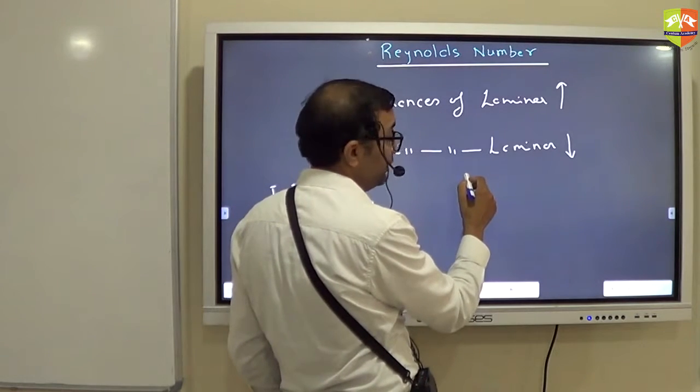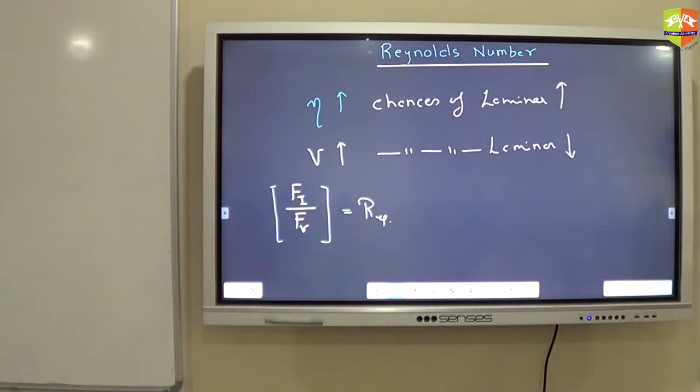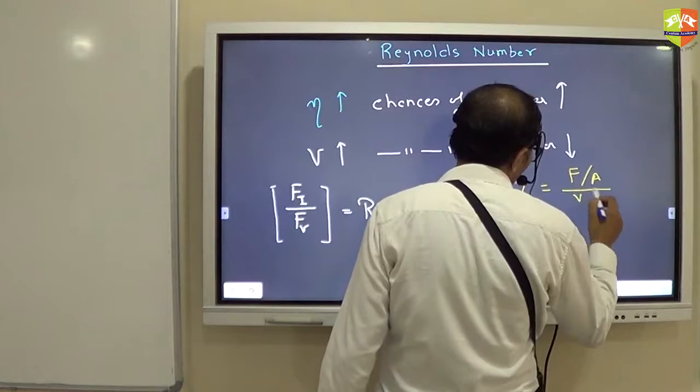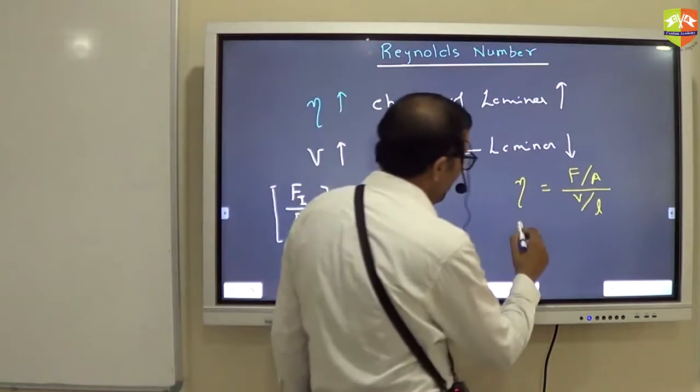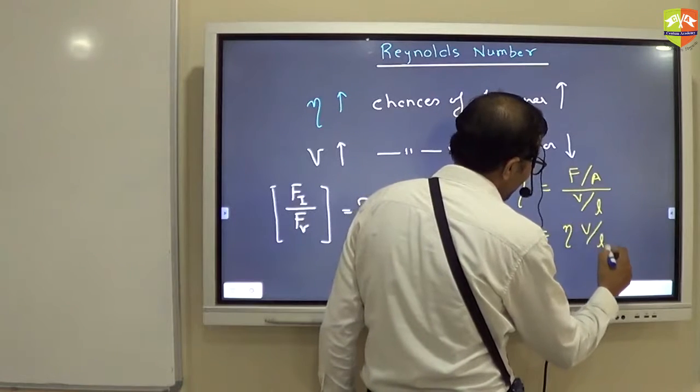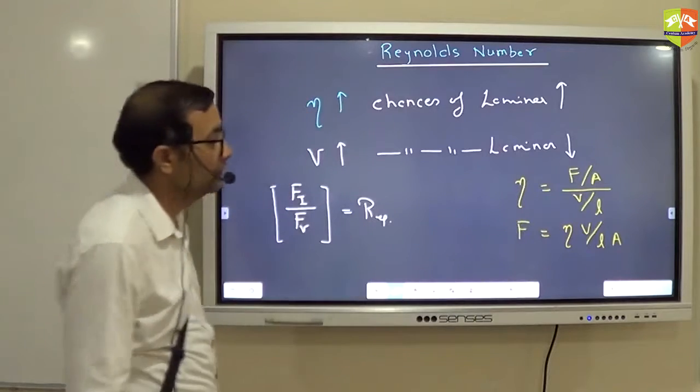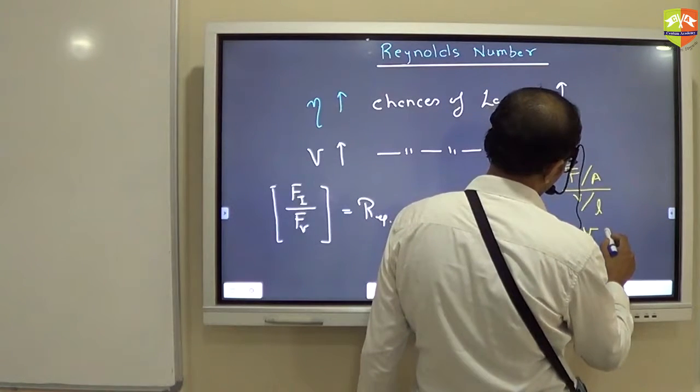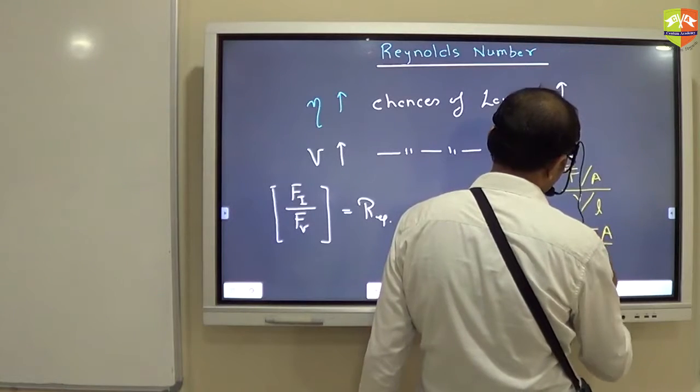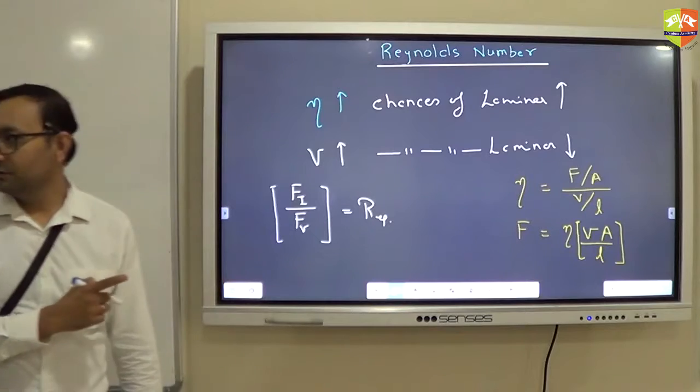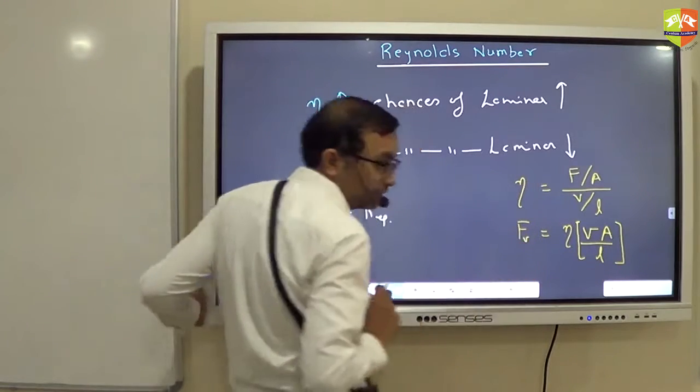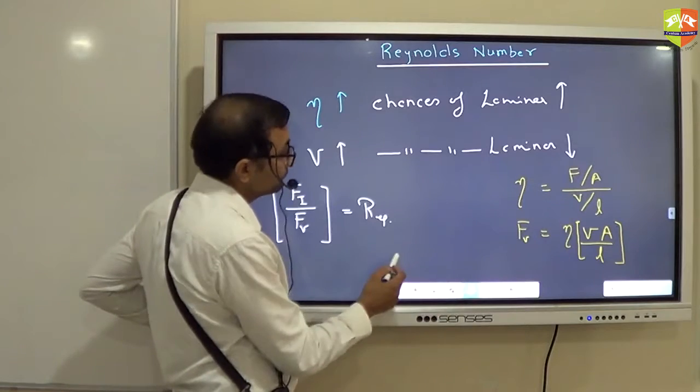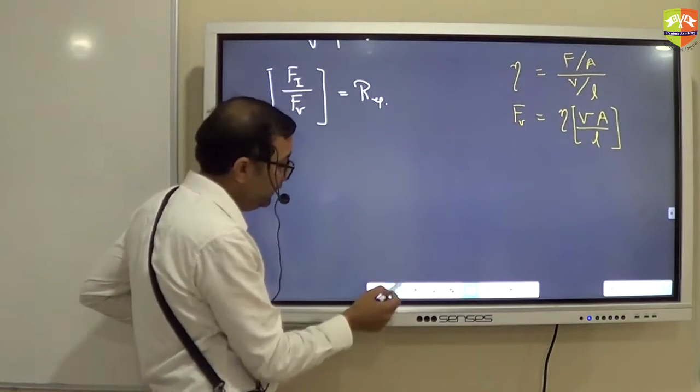Now tell me how do I write the viscous force? I will talk about inertial force later on. What is viscous force, how do you write it? I have a definition of coefficient of viscosity, right? F by A divided by V by L. So F is what? Eta times V by L times A. Is this correct? Any doubt? This represents viscous force.